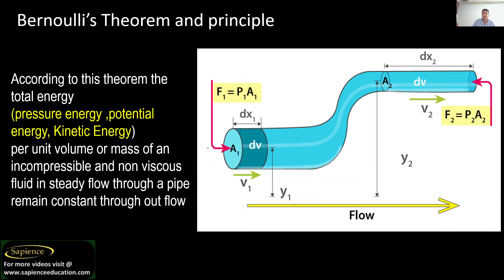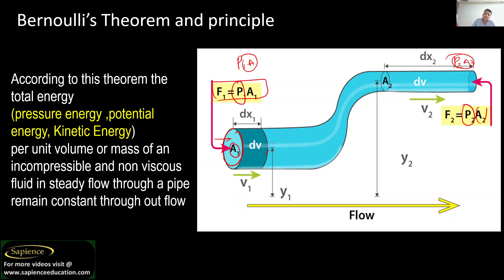Let us see what the diagram indicates. There is a pipe where the area of cross section at inlet is A1 and at outlet is A2. Pressure at inlet is P1 and pressure at outlet is P2. Force equals pressure into area, so force at inlet is P1·A1 and force at outlet is P2·A2. The liquid is at height Y1 at inlet and height Y2 at the outlet side.